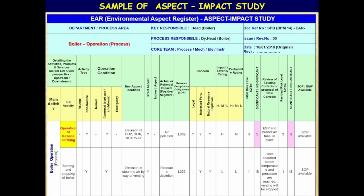This is the continuation of the EAR for boiler operation process. In the first row, the sub-activity is given as operation of furnace or oil firing in the boiler, shown with yellow color background. You can see that both initial risk and residual risk are the same, in spite of having operation controls — that is, ESP and oil burner air fans — in place. Management decides to have this aspect as significant because it comes under legal compliance, interested party concerns, neighborhood concerns, and natural resource depletion.